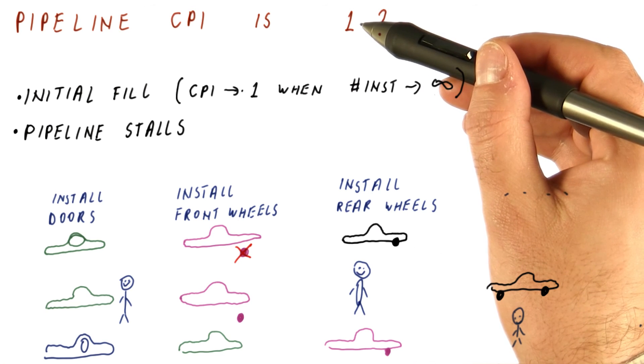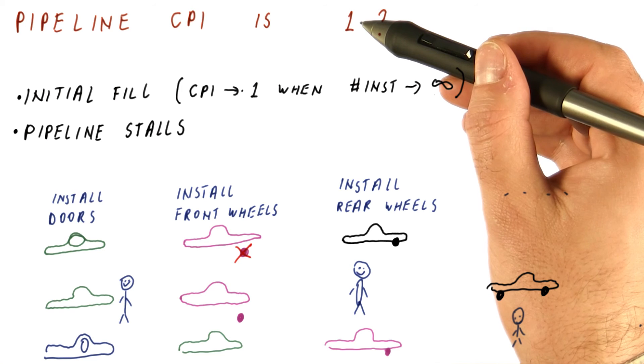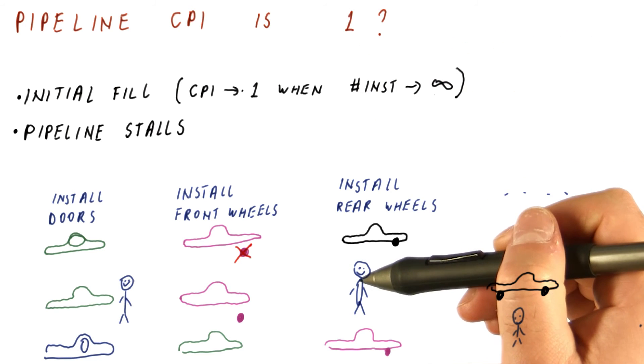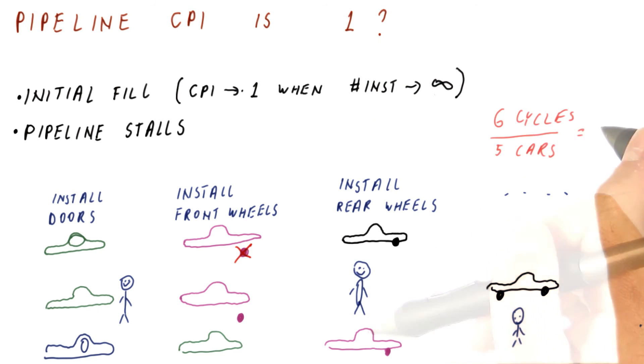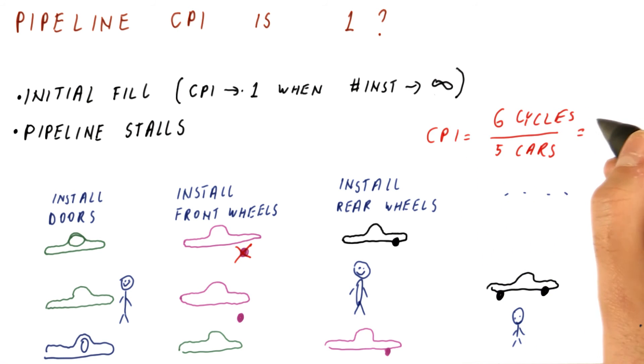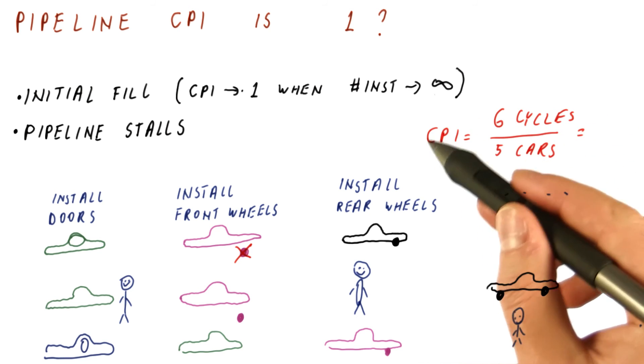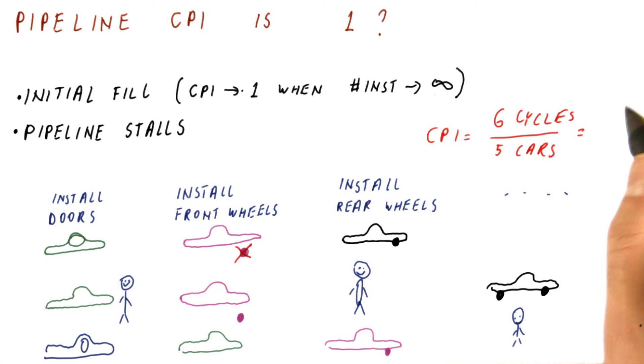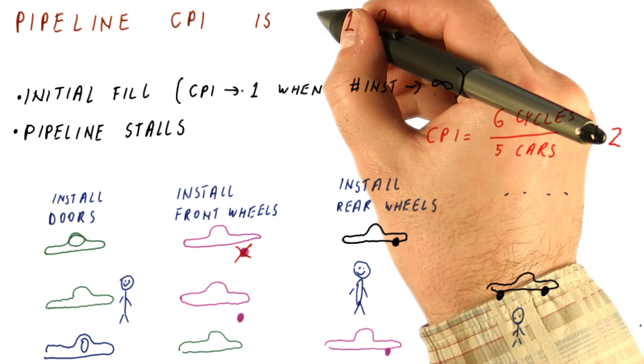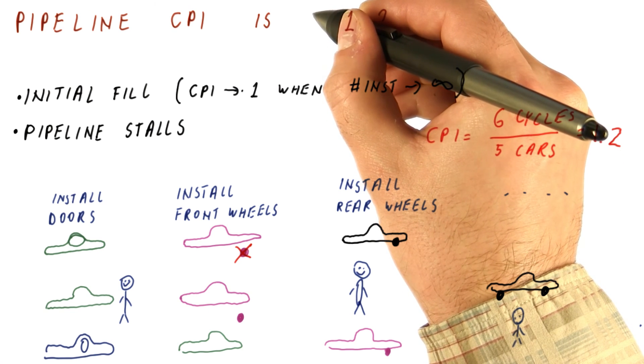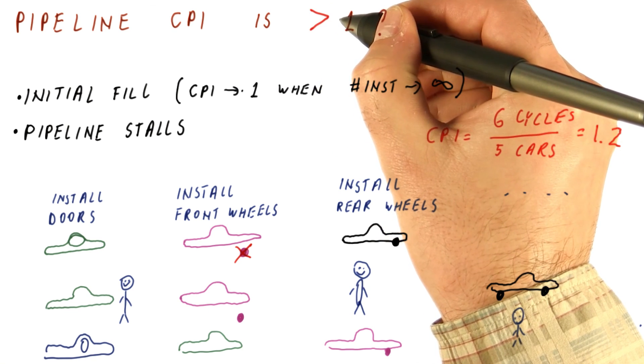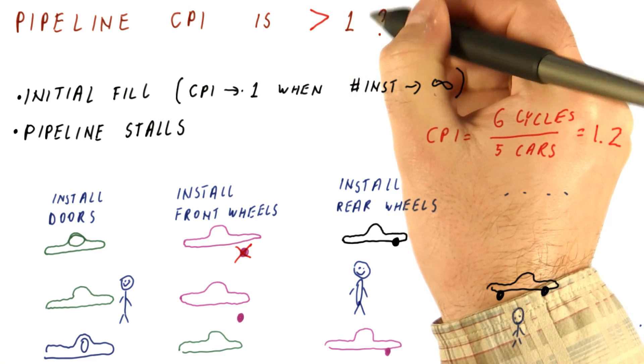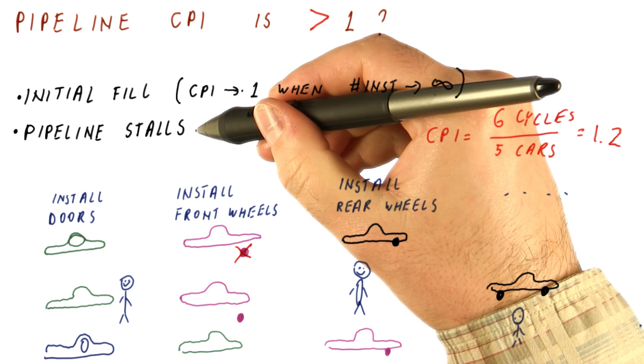If these stalls happen on a regular basis, the CPI will not be one. It will be lower than one. For example, if every five cars we have this, then it really takes six cycles to finish five cars. So the CPI is six cycles over five cars, and we end up with a CPI of 1.2, not one. So even the steady state pipeline CPI will be larger than one, meaning we don't finish an instruction every cycle because of pipeline stalls.